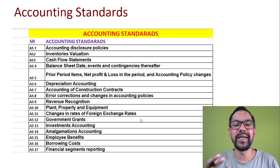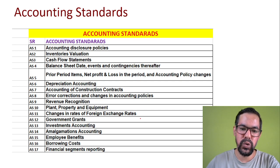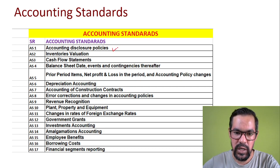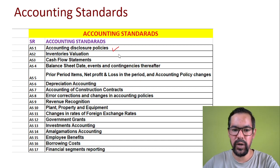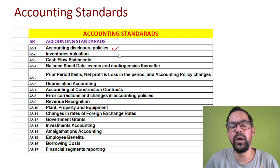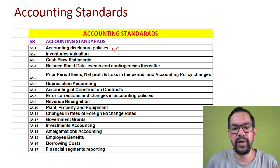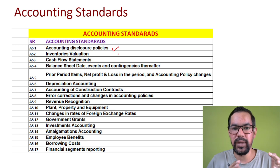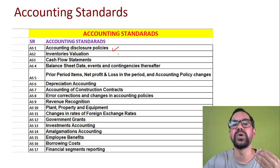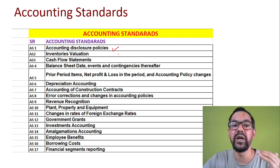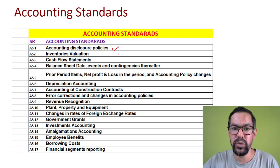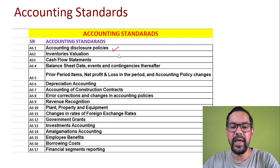The first accounting standard is Accounting Disclosure Policies. It relates to all significant policies adopted in the preparation of financial statements — these should be disclosed. So if you are preparing accounts, the fundamentals of that particular account, or any relevant information related to investors, must be disclosed in the accounts of that particular company.